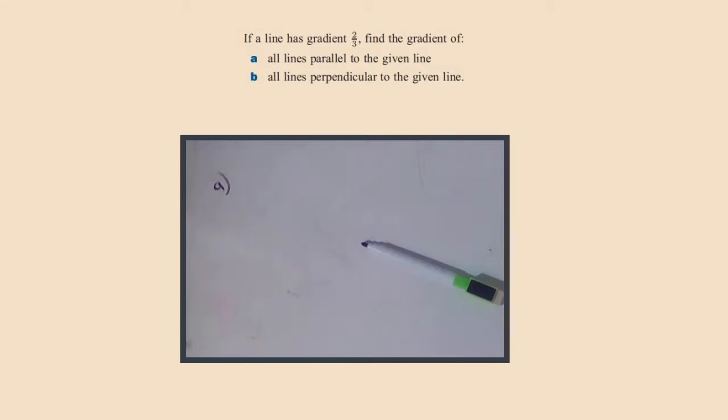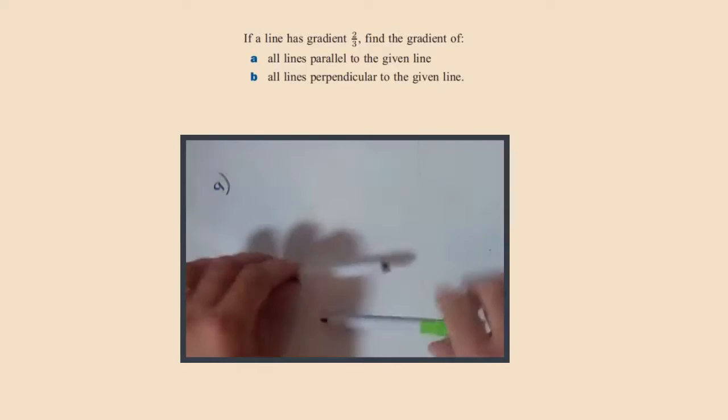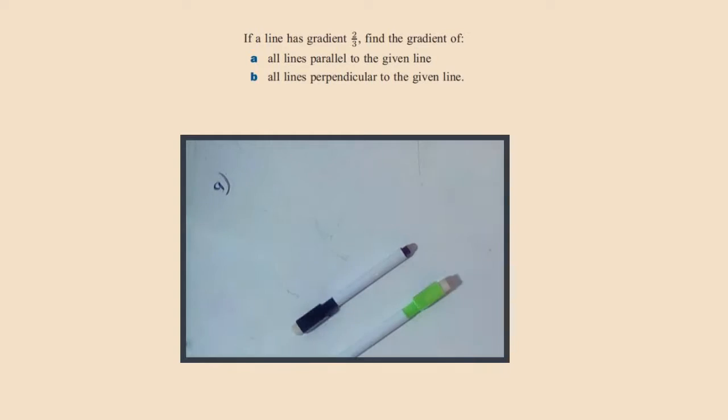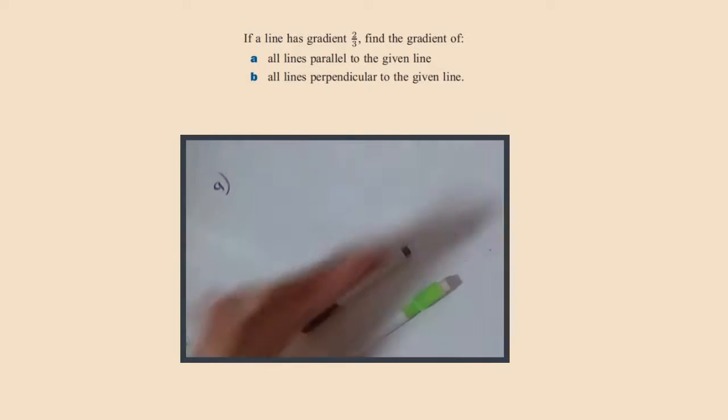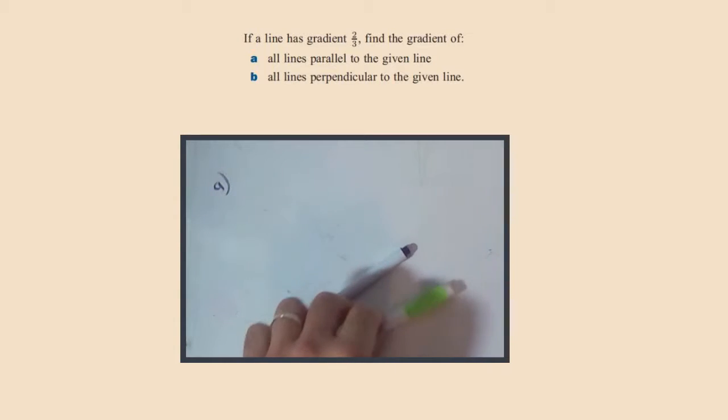So if I had two lines, the only way they can be parallel is if they have exactly the same gradient, because gradient can be converted to an angle. Parallel lines have the same gradient.